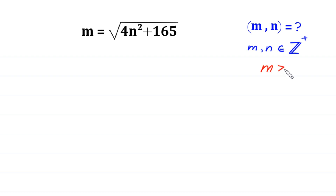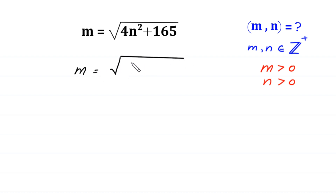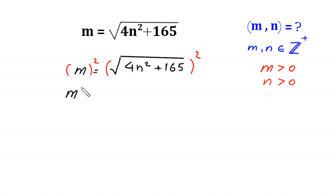It means m is greater than 0 and n is greater than 0. Let's start by taking the square of both sides. M is equal to square root of 4n squared plus 165, and we take the square of both sides of this equation. At the left side we are left with m squared, and at the right side the square cancels with the square root, leaving 4n squared plus 165.